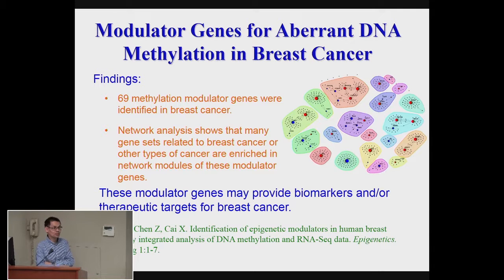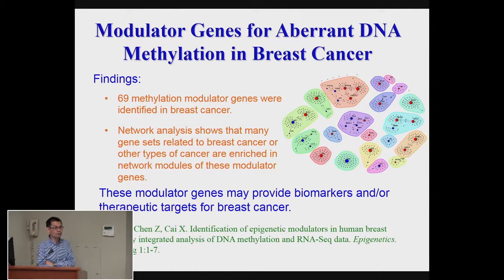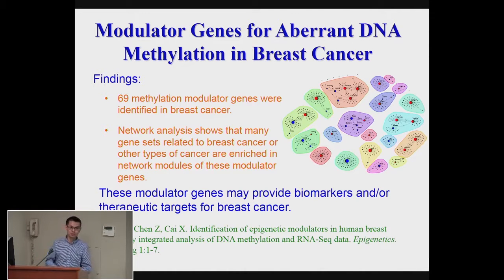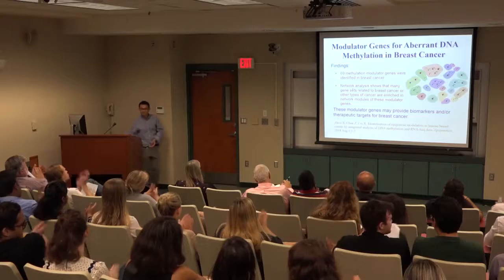Then we did a network analysis. We found that a lot of cancer genes and non-cancer genes are involved in the genes that we identified. This set of genes basically provides biomarkers and therapy targets for breast cancer. That results in a paper just published this month. Thank you.